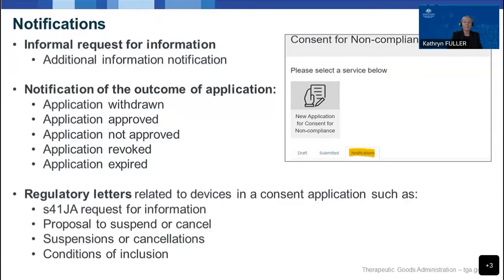The last type of notification you may see on the dashboard are regulatory letters related to devices that are part of an approved consent application. These can include, but are not limited to, Section 41JA requests for information, proposals to suspend or cancel a device, cancellation or suspension letters, and letters relating to conditions of inclusion. Some notifications will require a response from the sponsor, such as a Section 41JA request for information, while others, such as cancellation letters, do not require a response.